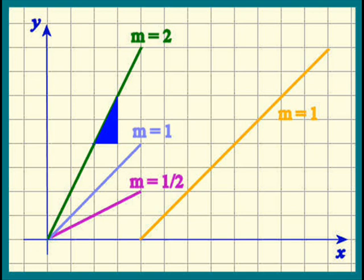Look at the purple line. Two over four is a half. The blue line, four over four is one. The green line, eight over four is two.